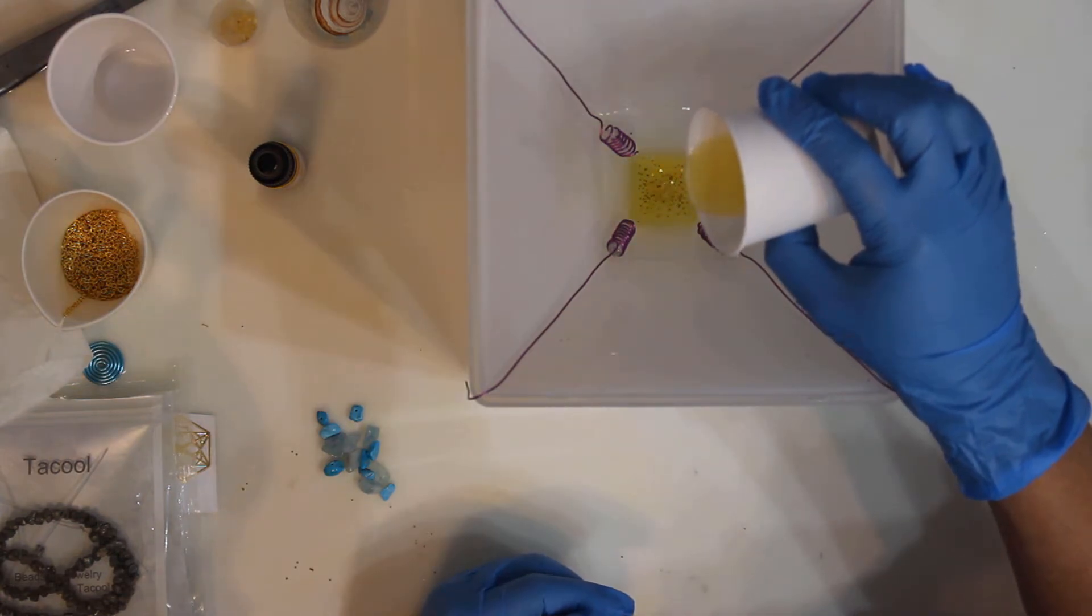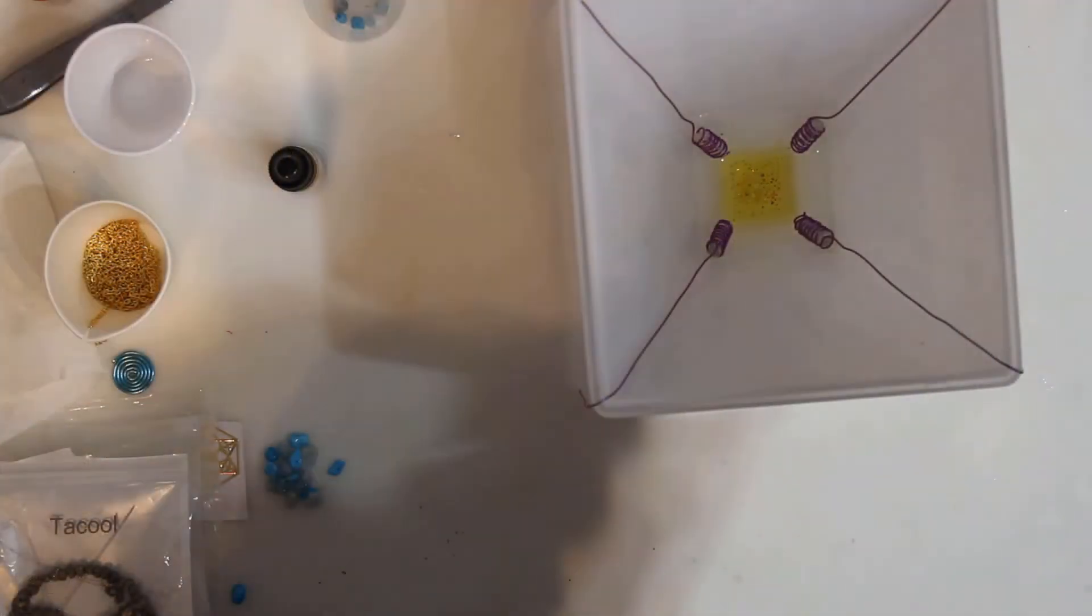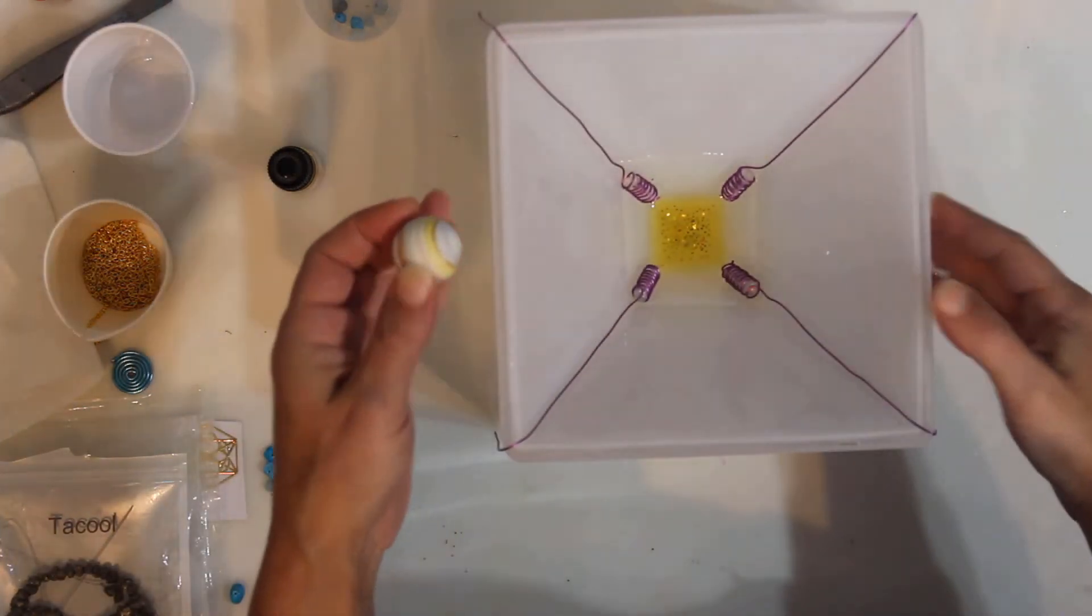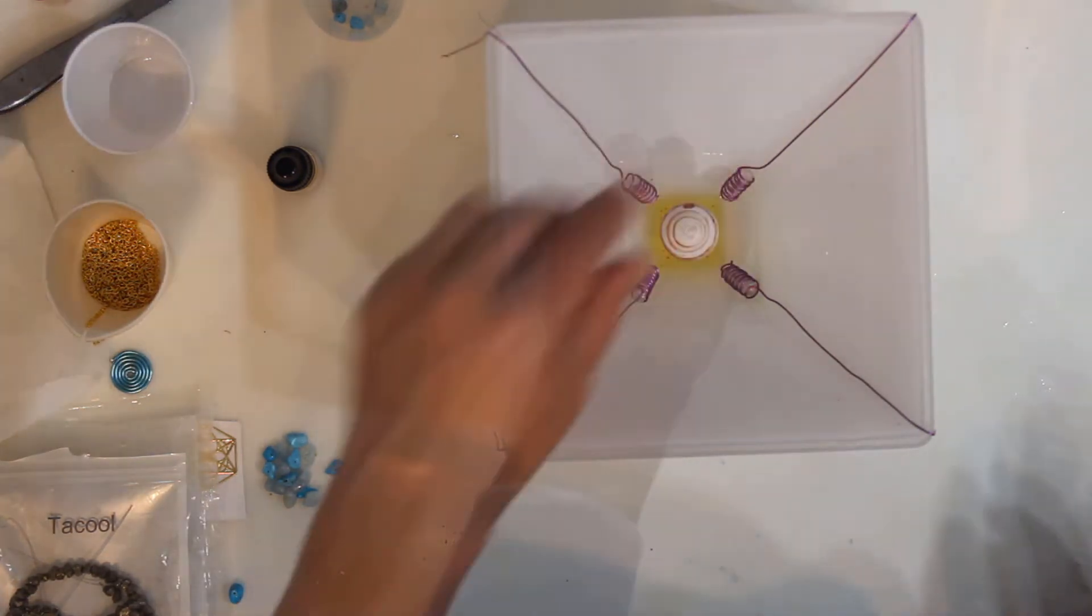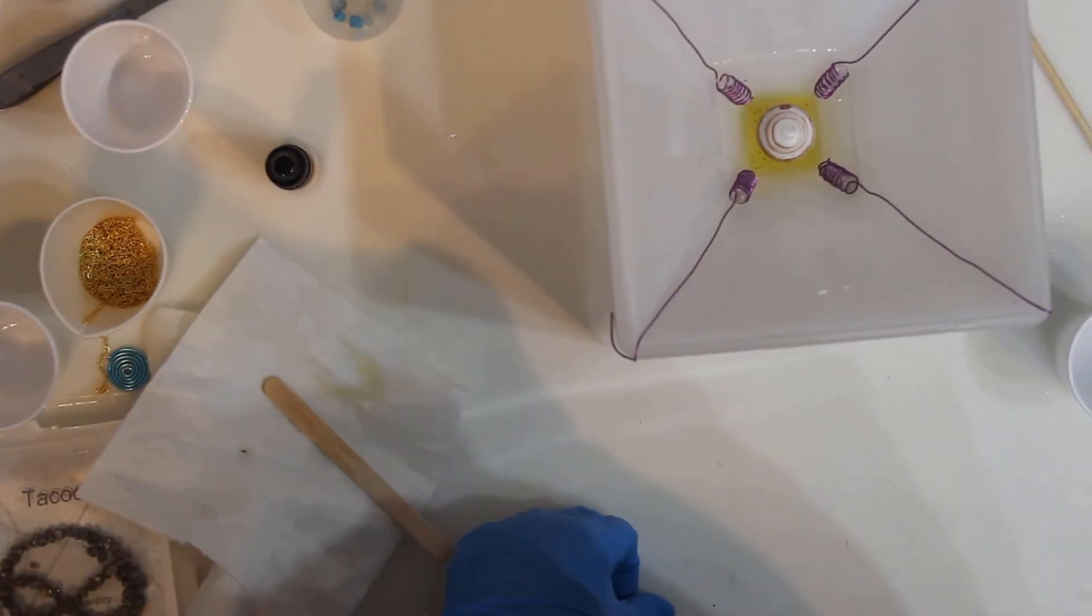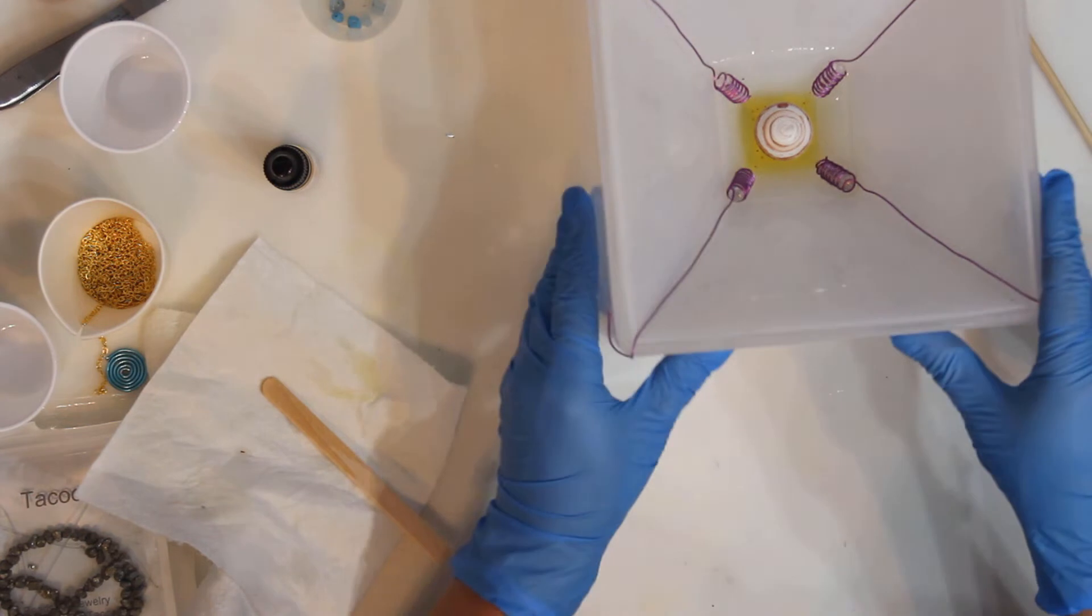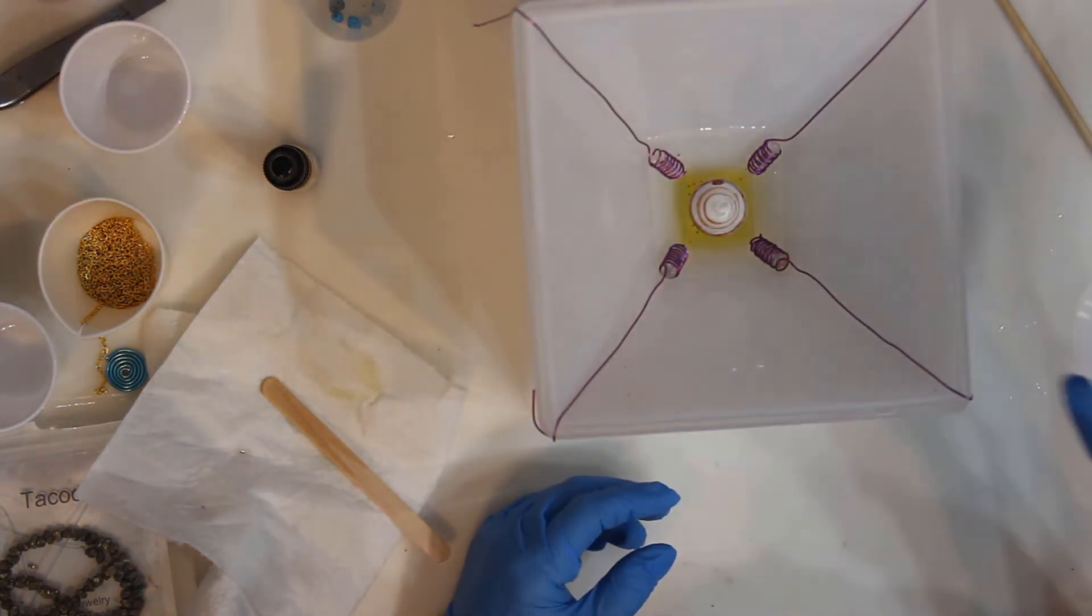Once this layer has cured enough I will place the marble painted to look like Jupiter. I will then pour two layers of clear resin to submerge the planet Jupiter and the wire wrapped crystals.